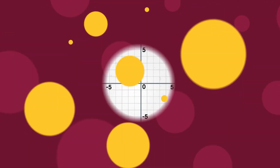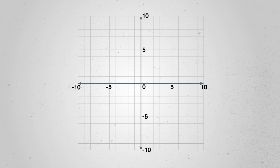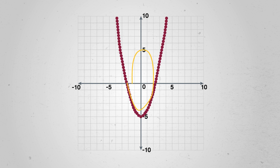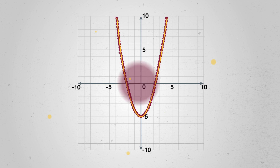We can't get a sense of the shape of a line or curve without plotting enough data points. For instance, let's say we want to find an equation that fits this data. One point — total mystery. Two points? That might be a line. Three, four, five points? It doesn't look like a line. Maybe a circle, or a loop-de-loop? We still don't know. But 76 points? A parabola — or at least some kind of U-shaped curve.